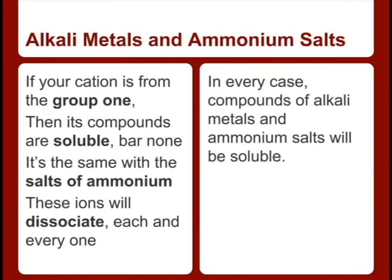If your cation is from Group 1, then its compounds are soluble, bar none. It's the same with the salts of ammonium — these ions will dissociate each and every one.